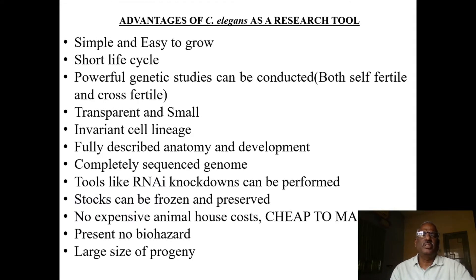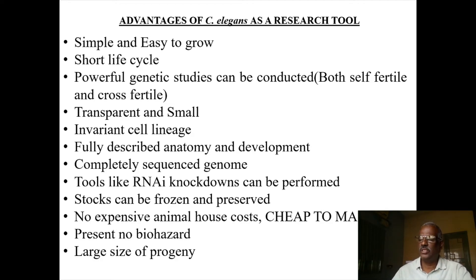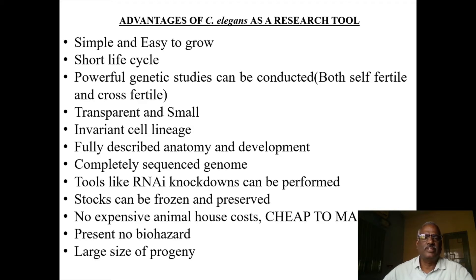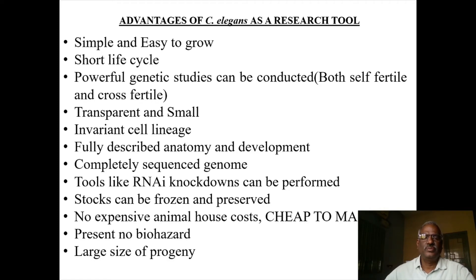It is very simple and easy to grow. It can be grown in a petri dish using the media used for the growth of E. coli. It has a short life cycle of only three to five days at 20 degrees Celsius. Powerful genetic studies can be conducted; it is both self-fertile and cross-fertile. It is transparent and we can observe the dopaminergic neurons. It is small — one millimeter in length — and has an invariant cell lineage. Its anatomy and development are fully described.